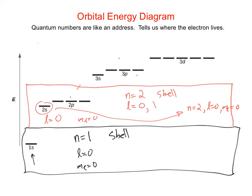When we go to the n equals three shell, the possible values of L are zero, one, and two. So we again get one S orbital and three P orbitals. When L equals two we get D orbitals, and M sub L can be negative two, negative one, zero, one, or two — so there are five D orbitals in the D subshell.